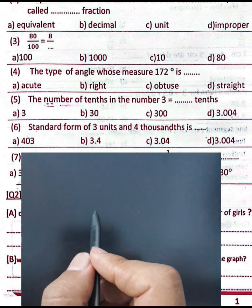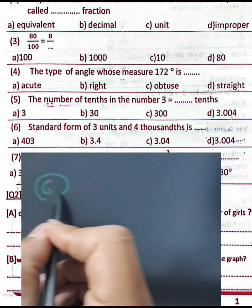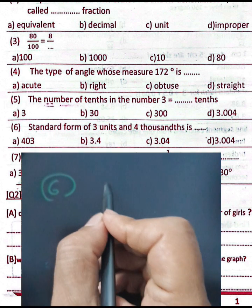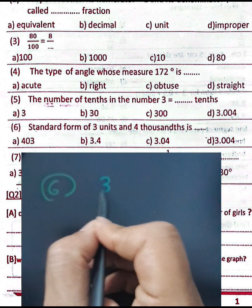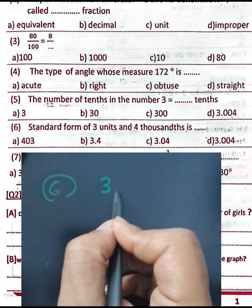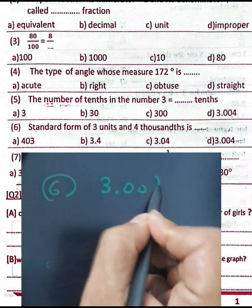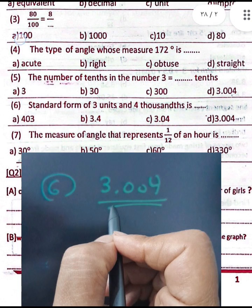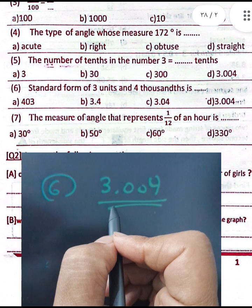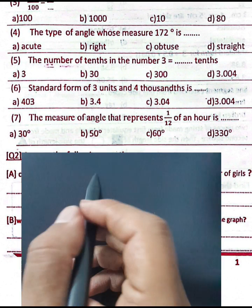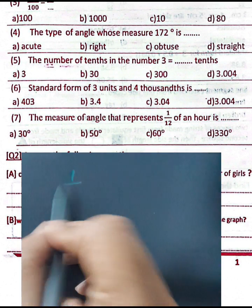Question number six: the standard form of three units and four thousandths. Question number seven: the measure of the angle that represents one over 12 of an hour.